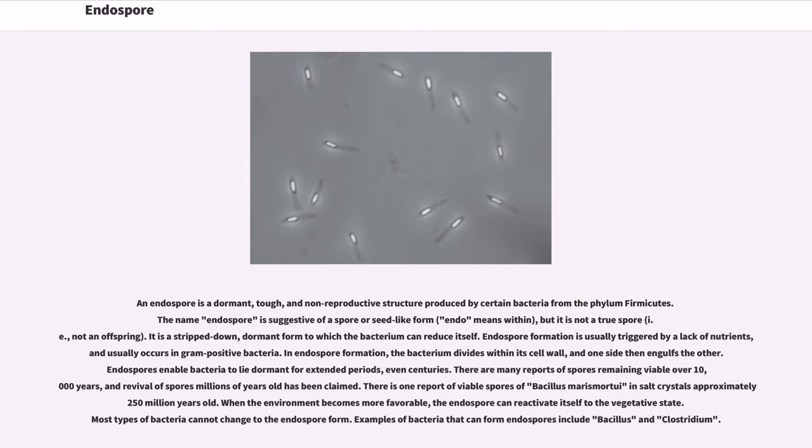There is one report of viable spores of Bacillus marismortui in salt crystals approximately 250 million years old. When the environment becomes more favorable, the endospore can reactivate itself to the vegetative state. Most types of bacteria cannot change to the endospore form. Examples of bacteria that can form endospores include Bacillus and Clostridium.